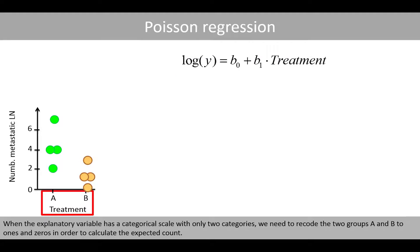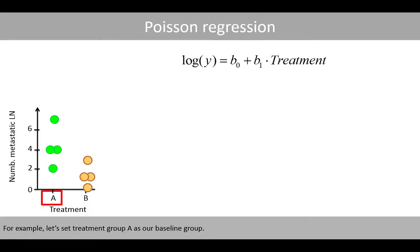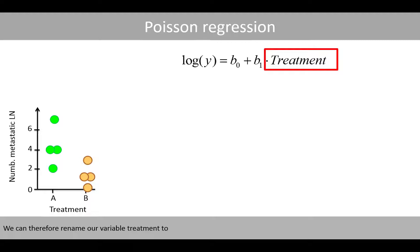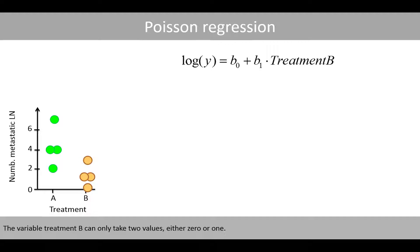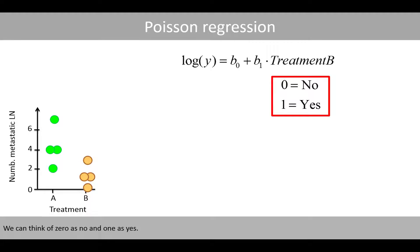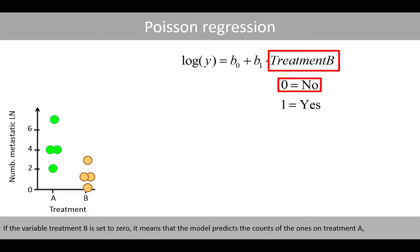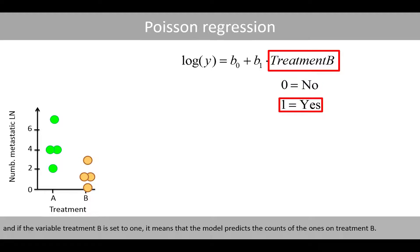When the explanatory variable has a categorical scale with only two categories, we need to recode the two groups A and B to ones and zeros in order to calculate the expected count. For example, let's set treatment group A as our baseline group. We can therefore rename our variable to treatment B, which can only take two values, either zero or one. We can think of zero as no and one as yes. If treatment B is set to zero, the model predicts the counts for those on treatment A, and if set to one, it predicts the counts for those on treatment B.